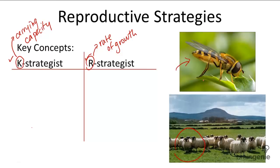R-strategists tend to occur when there's little competition for resources and the environment is nowhere near carrying capacity, so they reproduce really rapidly while there's still room for growth and there's an abundance of resources. You can think of insects having a lot of offspring because there's enough resources to go all around.